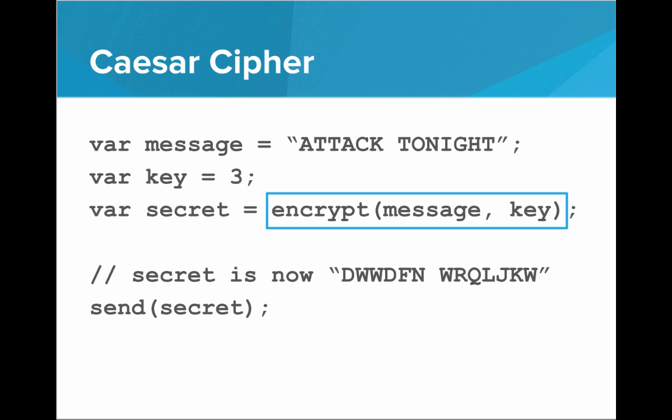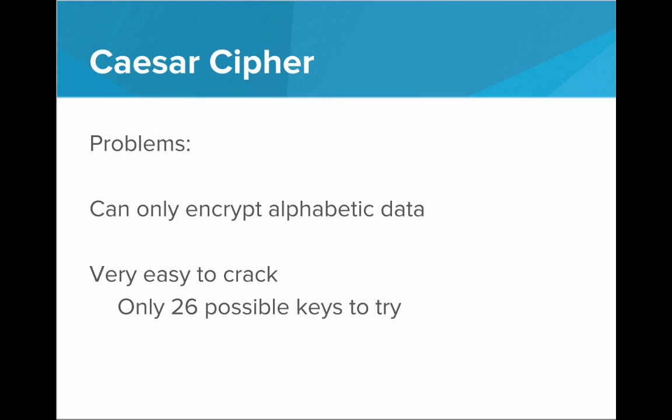But there are many encryption algorithms besides the Caesar cipher. This encrypt function could be doing one of many things — it could be doing the RSA algorithm, it could be doing the Schaaf's algorithm. It doesn't really matter what's going on inside; the result is an encrypted message that is a product of the original data and the key. Now, there are some problems with the Caesar cipher. One problem is that it can only encrypt alphabetic data, but a lot of times we need to encrypt images, numbers, etc. The other problem is that it's very easy to crack. If an enemy knew it was encrypted with the Caesar cipher, there are only 26 letters in the alphabet, so there are only 26 possible keys they would have to try before decrypting the message.